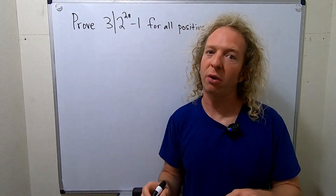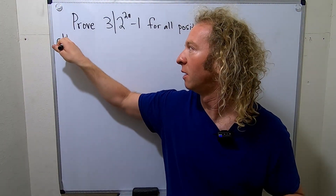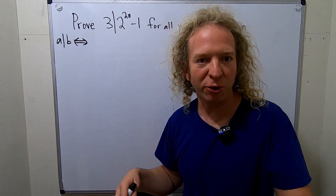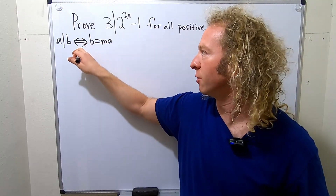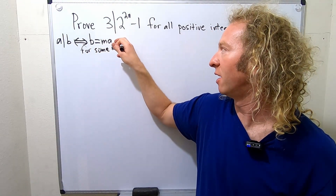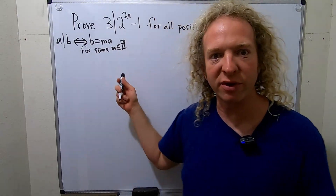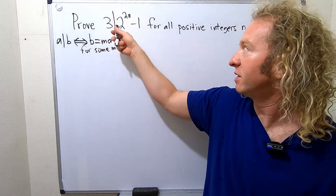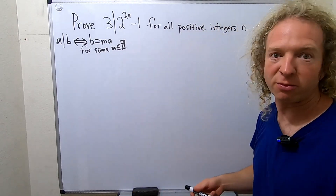Before we do this problem, let me just recall what the divide symbol means. So A divides B is equivalent to — that's what this double arrow means — it means the same thing as saying that B is a multiple of A. So B is equal to M times A for some integer M, in the set of integers. You can just say for some integer M. So A divides B if B is a multiple of A — in this case, 3 divides this means this is equal to 3 times some integer.